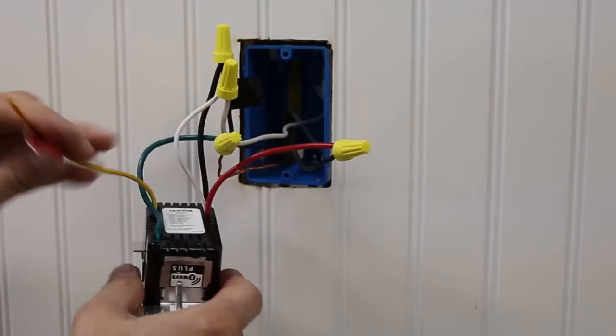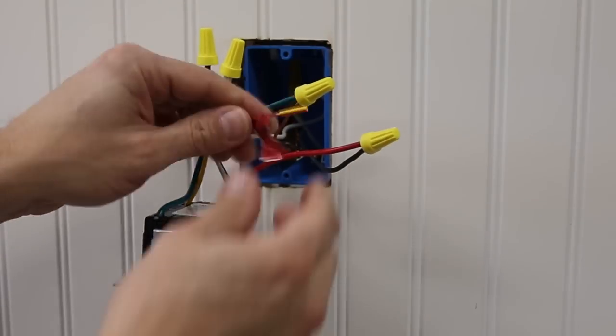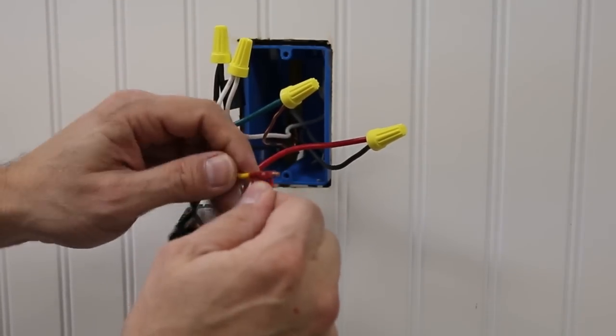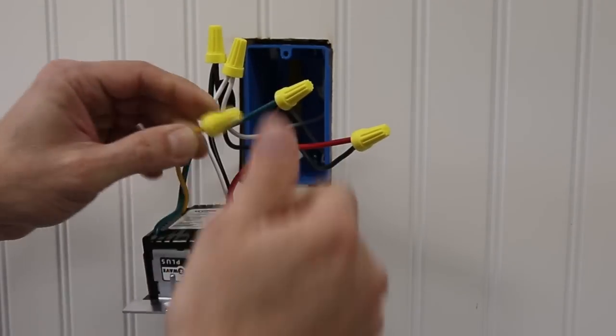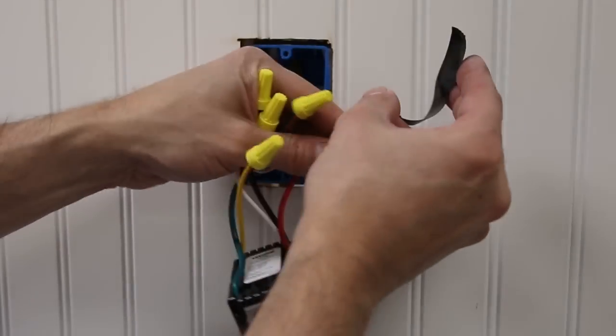The wires are now terminated. Give the wires a tug to ensure they are firmly held in the wire connector. The red dimmer lead should have a red insulation affixed. If the red insulation label is not affixed, please use electrical tape or a wire connector to cover. Dress the terminated wires with electrical tape to ensure stability before the device is installed in the wallbox.